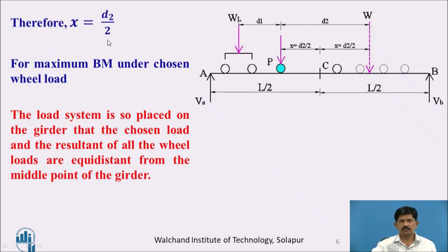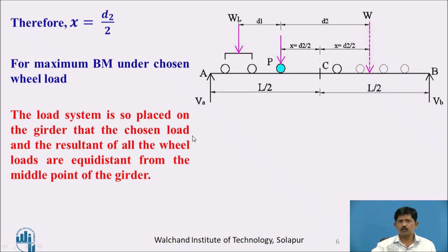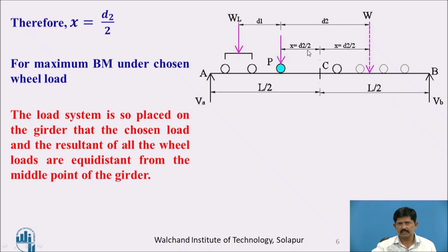From dM/dx equals 0: summation of W/L into 2x equals summation of W/L into D2, giving x equals D2/2. So the condition for maximum bending moment under the chosen wheel load is: the load system is to be so placed on the girder that the chosen wheel load and the resultant of all wheel loads are equidistant from the middle of the girder — each at D2/2 from the center.